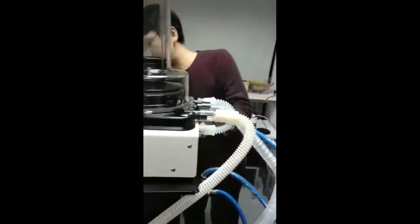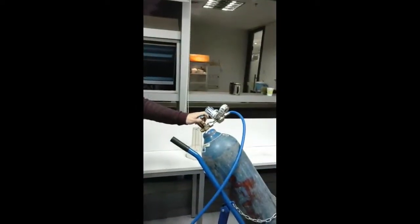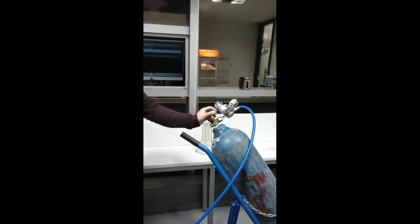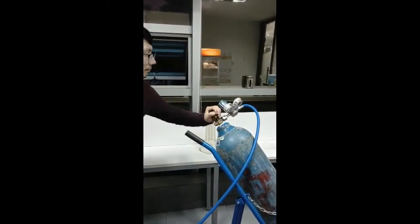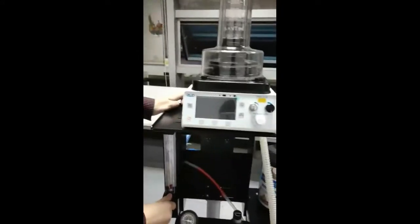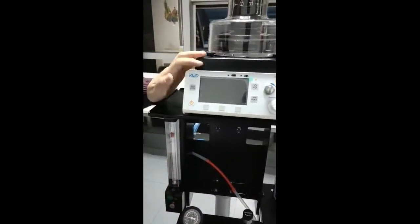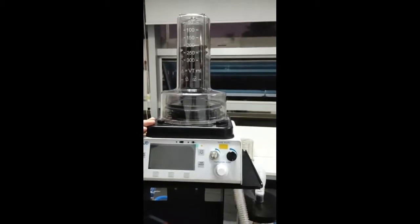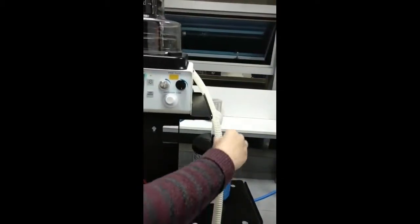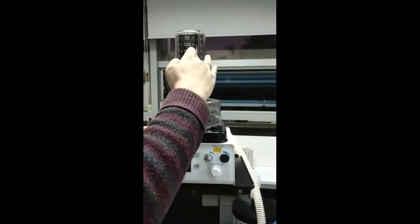Now everything is set. Next, we are going to turn on the valve of the oxygen tank to supply the driving gas. With the flow meter turned on, we can see the anesthesia gas will travel through this hose into ventilator and fill the black bellow inside.